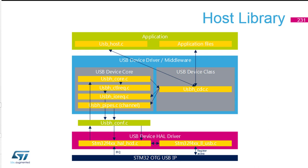There are two functions: one for control requests and IO requests, and one for the host pipes, which are the channels. This is common for all host applications regardless of class. From these functions, we call the class functions. So from the core, we call the class function — for example, we call the CDC process.